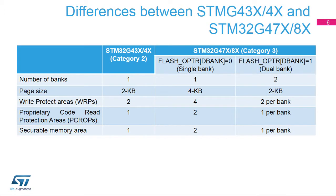This slide highlights the differences regarding the flash memory implementation between STM32G4-3X and 4X, called Category 2 microcontrollers, and STM32G4-7X and 8X, called Category 3 microcontrollers. The number of banks is 1 for Category 2, and 1 or 2 for Category 3 depending on the D-Bank option bit. The page size is 2 kilobytes for Category 2, 4 kilobytes for Category 3 with single bank, and 2 kilobytes for Category 3 with dual bank. Category 2 microcontrollers have one write protected area, one PCROP, and one securable memory area, while Category 3 microcontrollers have two write protected areas, two PCROPs, and two securable memory areas.